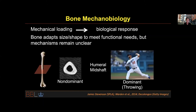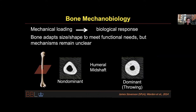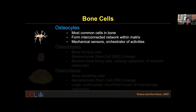Worldwide, probably thousands of PIs and students are working on this problem. It's really fascinating how mechanical loading creates a biological response such that bone can change its size and shape to meet functional needs. For example, you can see a professional baseball player comparing the dominant throwing arm with the non-dominant arm — dramatic differences in bone mass, with the dominant arm having much thicker cortical bone.